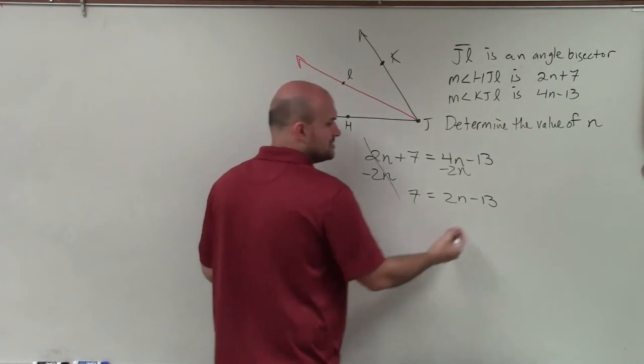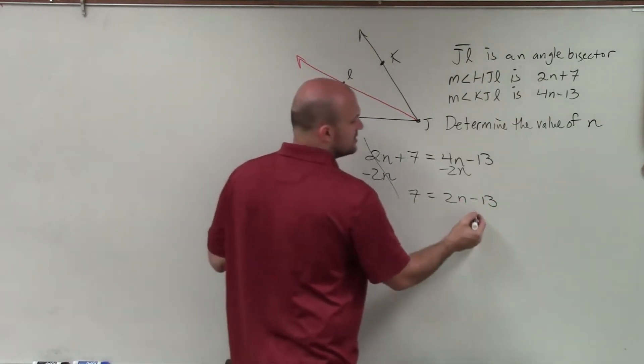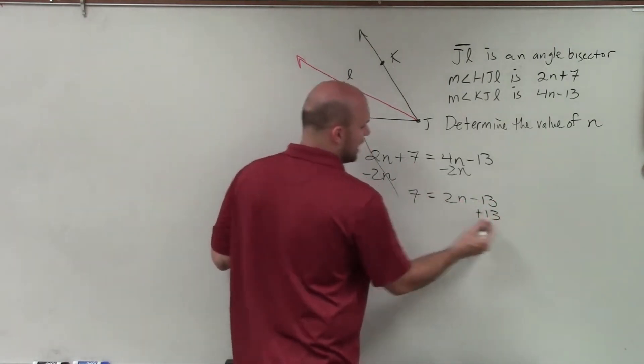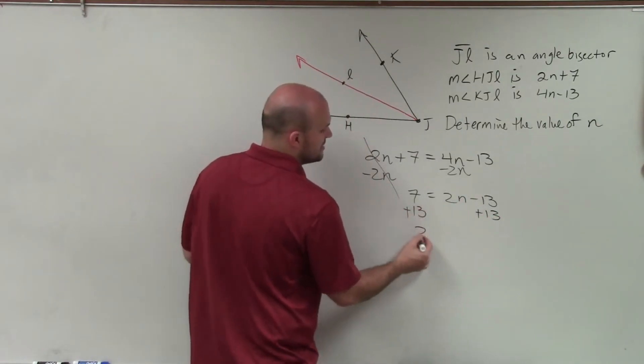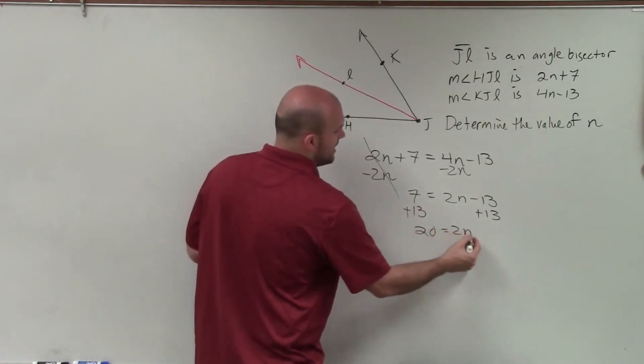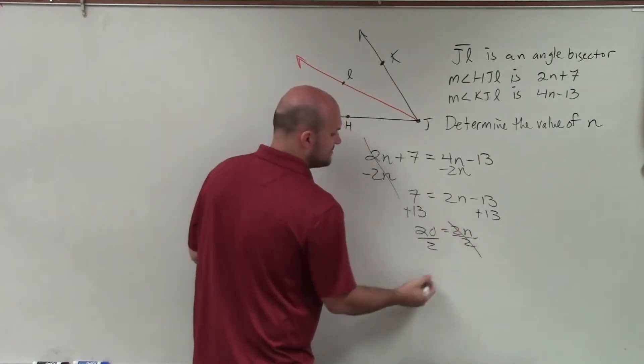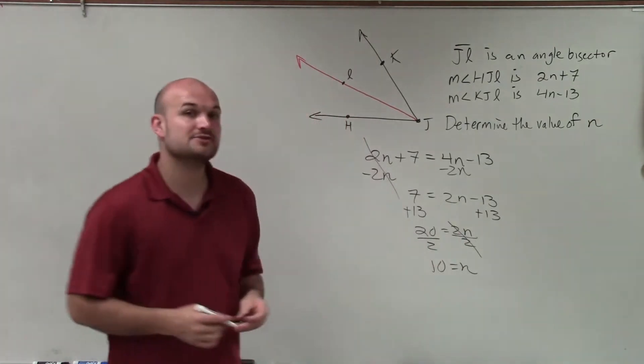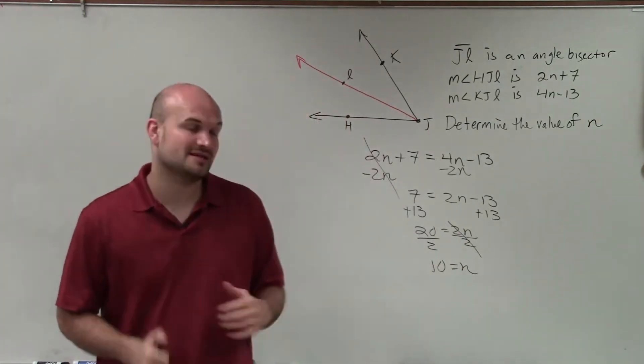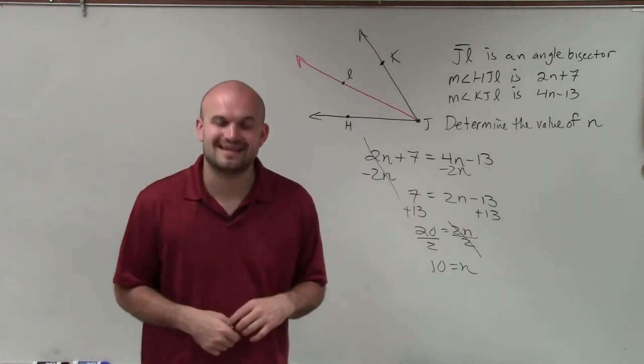Now I have a two-step equation, so I just need to undo subtraction from my variable. So I'll add 13 on both sides, and I have 20 equals 2n. Now I use the division property of equality by dividing 2. That divides to 1, and I'm left with 10 equals n. So there you go, ladies and gentlemen. That is how you use the definition of an angle bisector to solve an equation. Thanks.